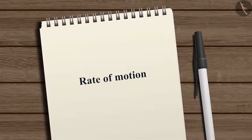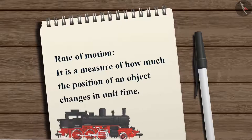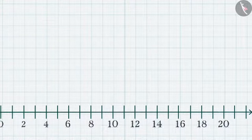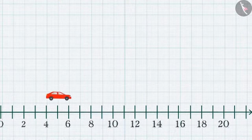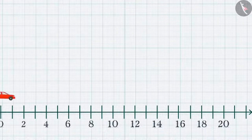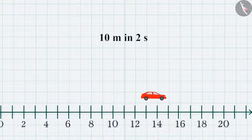Let's first understand what we mean by rate of motion — it is a measure of how much the position of an object changes in unit time. Consider a car starting from the origin; after 2 seconds it reaches 10 meters away, and in the next 2 seconds it covers another 10 meters. The change in position is 10 meters in each 2-second interval.